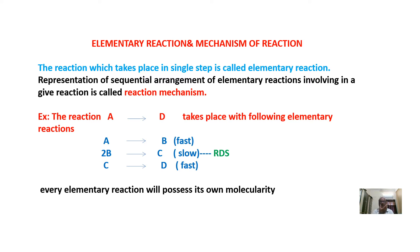Complex reactions contain many elementary reactions. In each elementary reaction, the reactant directly converts into products. If we represent all these elementary reactions of a complex reaction in sequential order, that sequential arrangement is called the reaction mechanism.